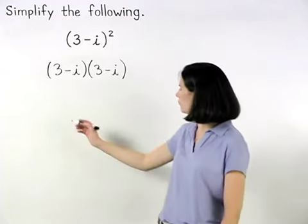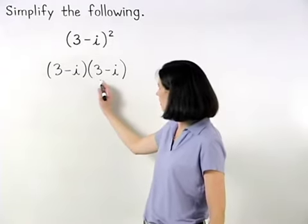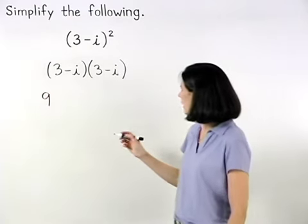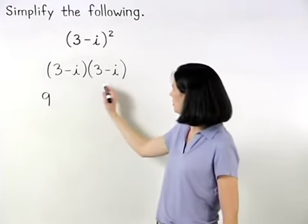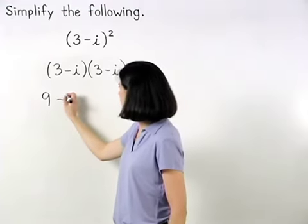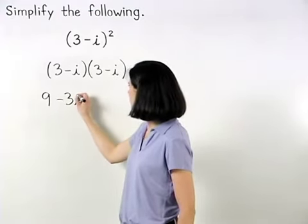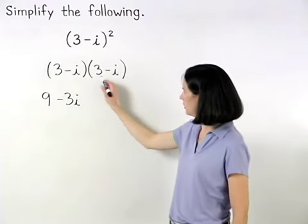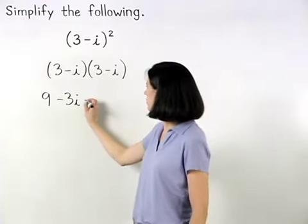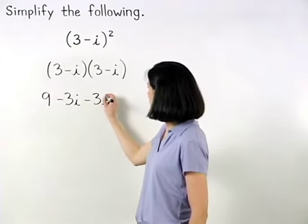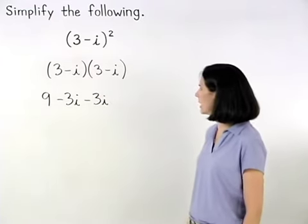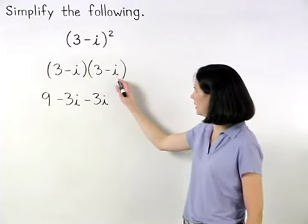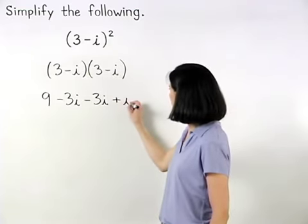The product of the first terms 3 times 3 is 9. The product of the outer terms 3 times negative i is negative 3i. The product of the inner terms negative i times 3 is negative 3i. And the product of the last terms negative i times negative i is positive i squared.